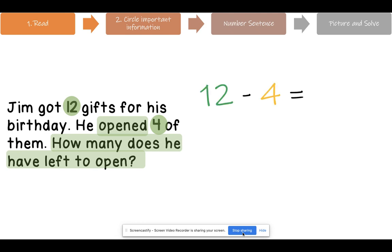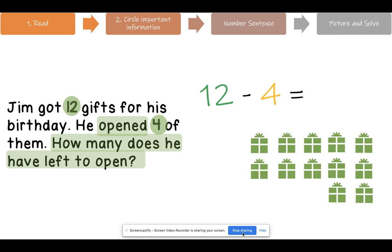So now we write our number sentence. The number sentence will look like this. 12 minus 4. 12 because he got 12 gifts and 4 because it's the number that he opened. The minus sign is going to help us determine how many he has left to open. Now let's draw our picture. How many presents did you draw? I hope you drew 12 because 12 is the start. How many are you going to mark off? Good. Let's count it off. 1, 2, 3, 4. After I marked off my 4 presents, how many does he have left to open? Good. So, Jim has 8 gifts left to open because 12 minus 4 equals 8. Good job.